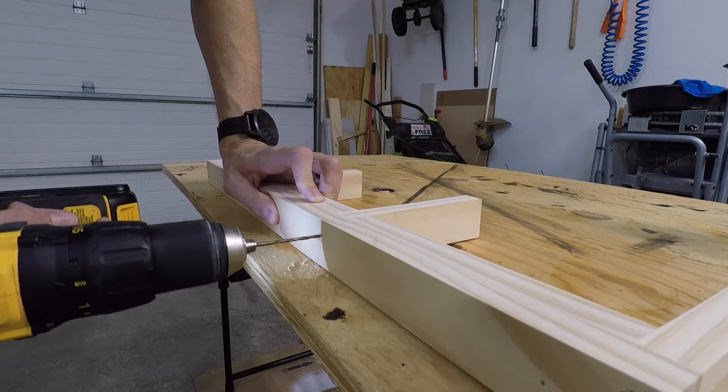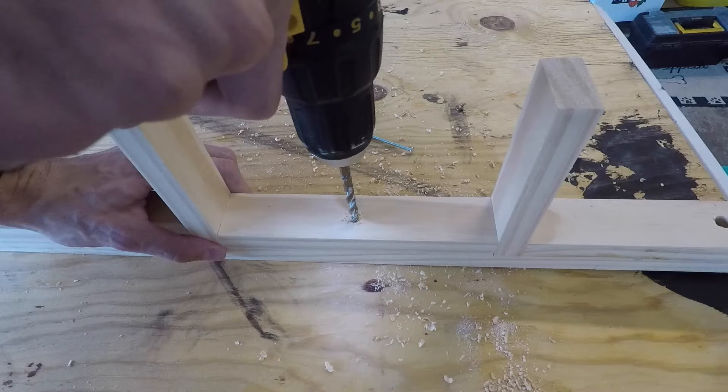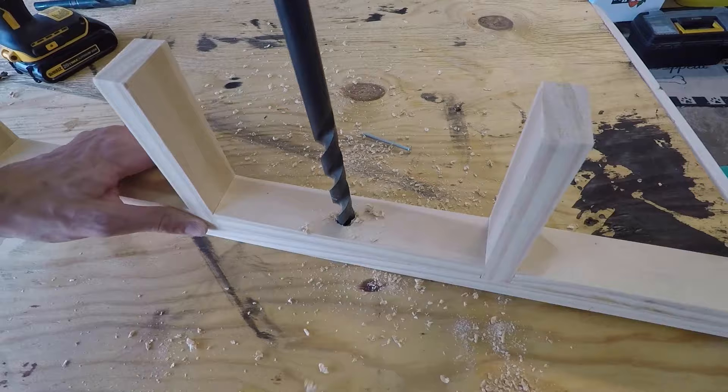So originally on the frame I did just use nails and glue, but went back and added a couple screws into these supports. Unfortunately where I'm hanging this there's only a stud in the middle, so here I'll drill a pilot hole for this bolt, and then on the sides I'll just have to use drywall anchors.